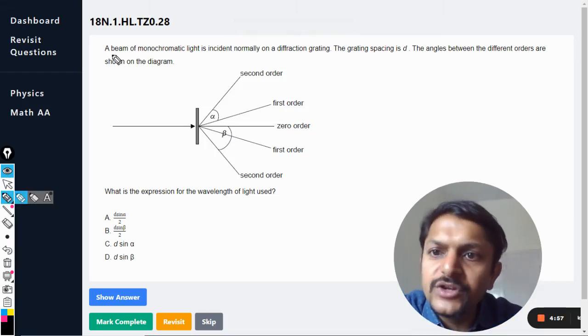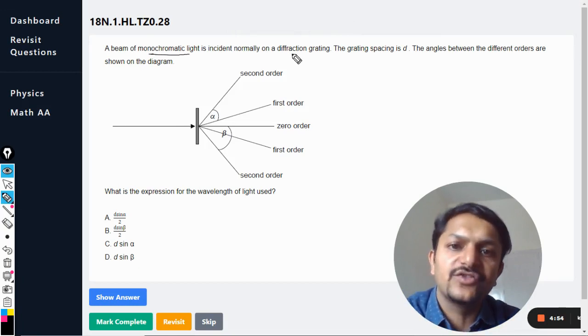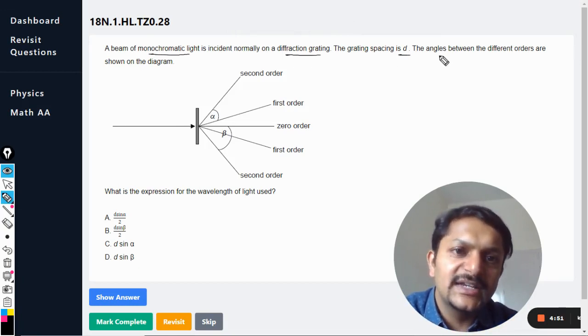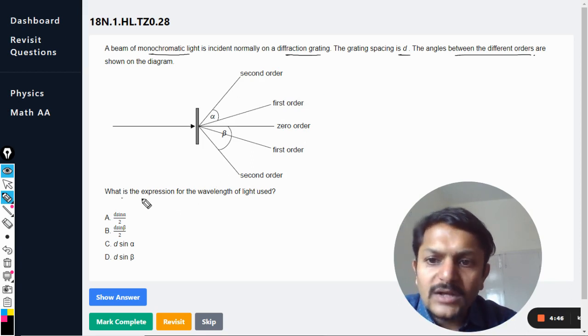Okay dear students, let us study this question. A beam of monochromatic light is incident normally on a diffraction grating. The grating spacing is d. The angles between the different orders are shown. What is the expression for the wavelength of the light used?